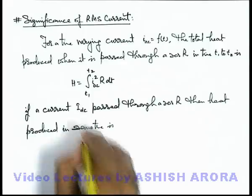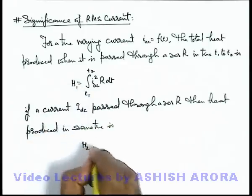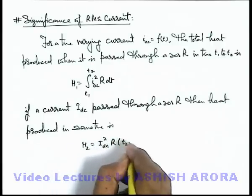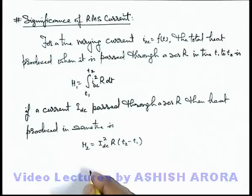is, this heat we can write say this is H1, this is H2. This can be written as idc square R multiplied by t2 minus t1, as current does not change with time we can directly use i square R delta t.